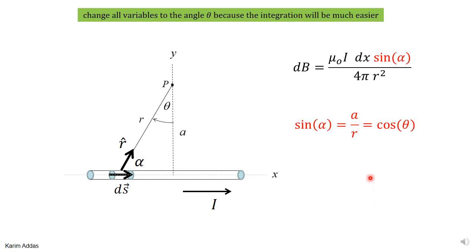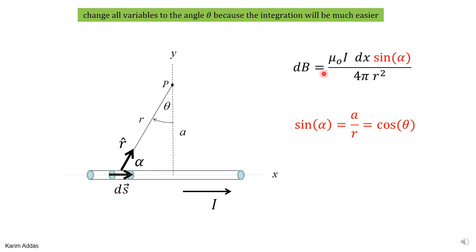Now we're going to change all the variables to the angle θ, where θ is the angle shown in the diagram. You might ask why we choose θ — why not α or x? You could choose any variable, but it turns out that if you take α or θ, the integration is much easier to do. In some textbooks they take α as the angle, in others they take θ; we're going to use θ. This means we need to write dx in terms of θ, sin α in terms of θ, and r in terms of θ, so that we can integrate everything in terms of θ.